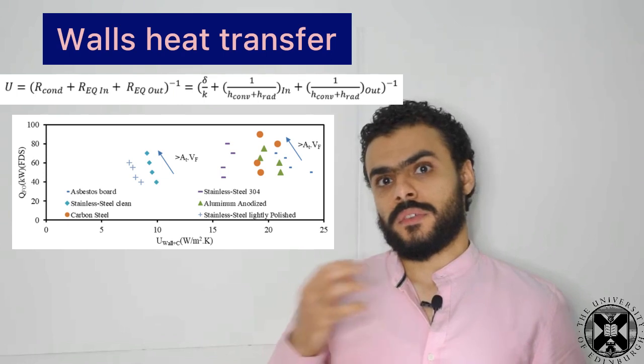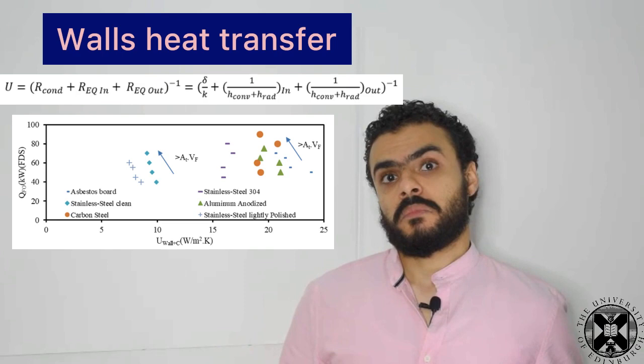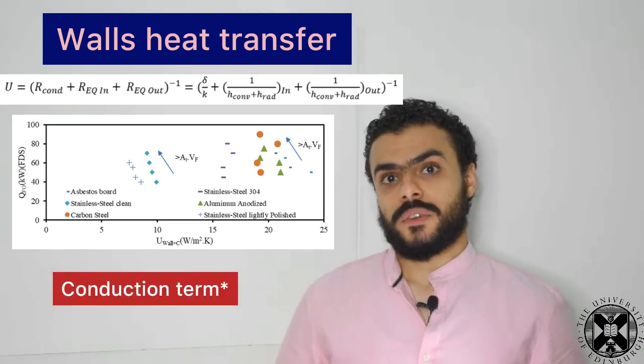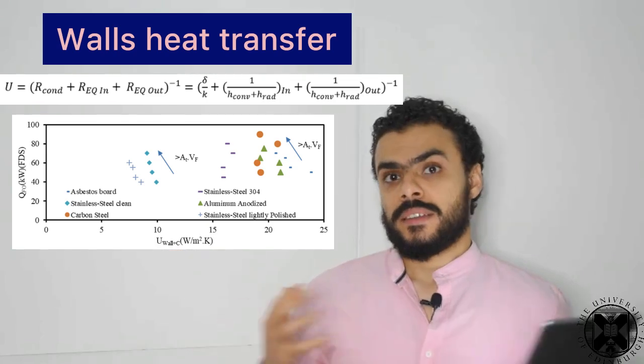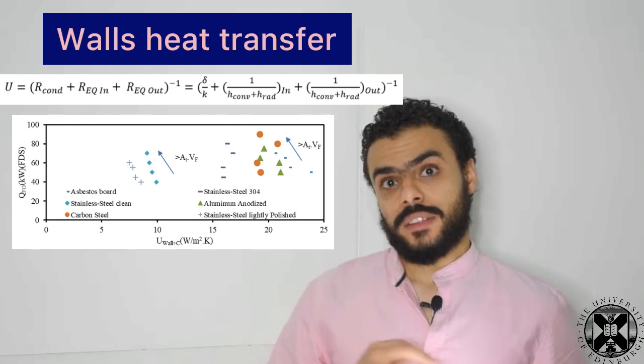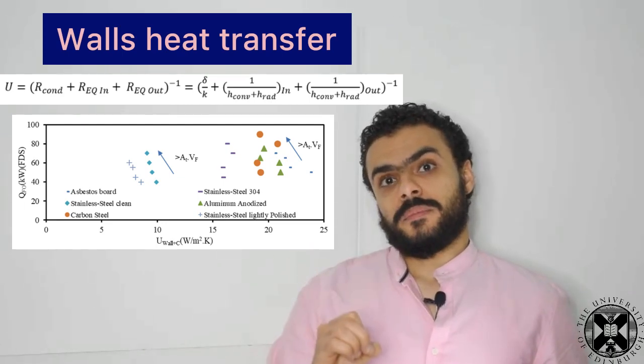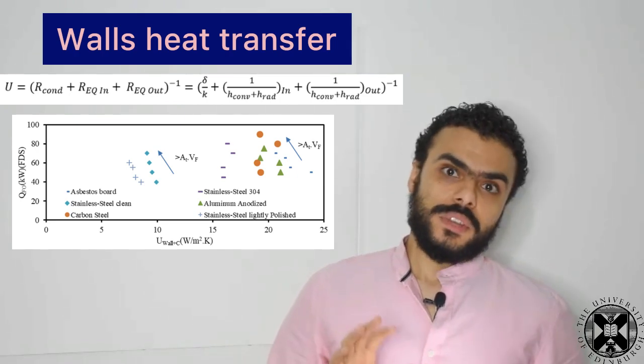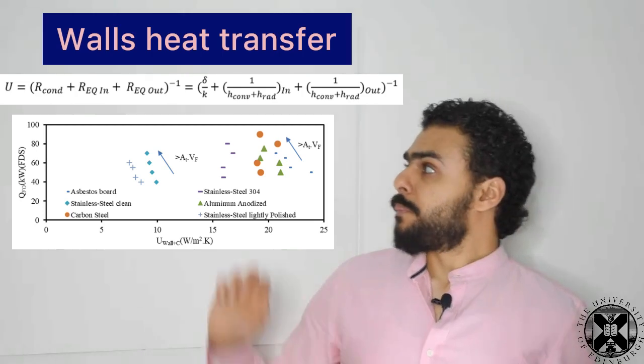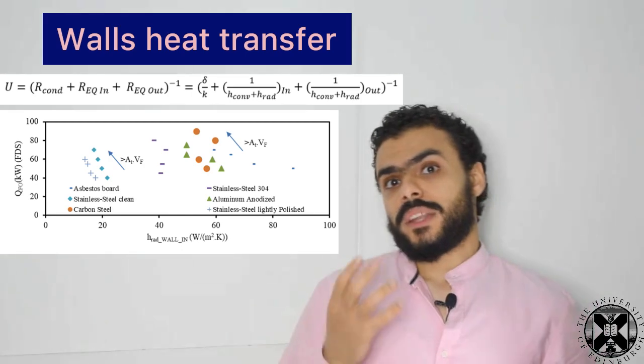First, we got rid of the conductive term and the relationship still stands, so we're on the right track. Then we got rid of the convective term and we still see that the relationship between the heat transfer coefficient and the heat release rate needed for flashover stands well. But once we changed the radiative term, this relationship collapsed. So we knew that the key parameter here is the radiative term. So we started to plot the radiative term against the heat release rate needed for flashover and found out that it's almost the same relationship and we could use this term to end up with an empirical equation.